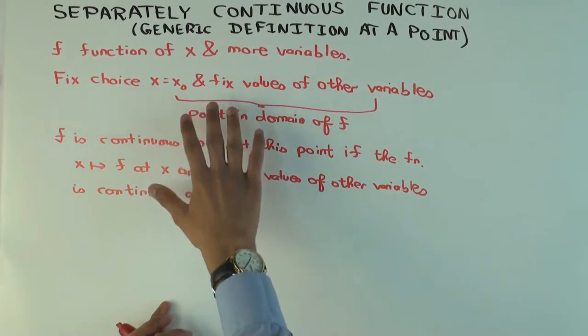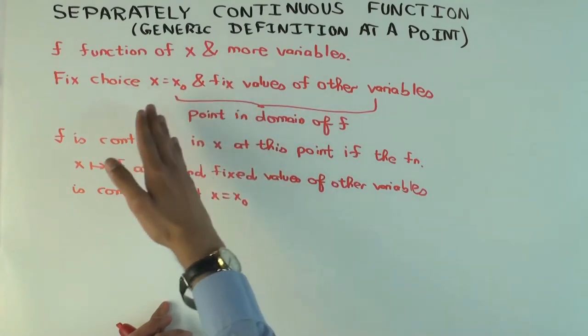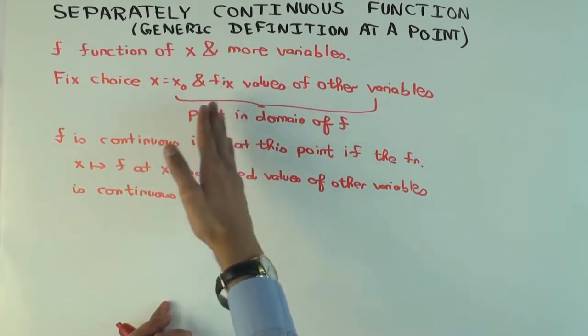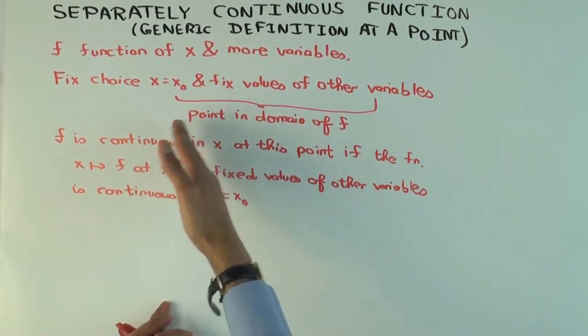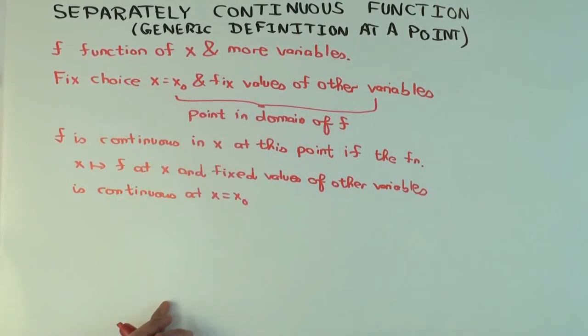So basically, it's just saying that at this point, if I just move x and keep the other variables fixed, is that change continuous in x at this point? That's all this is saying.